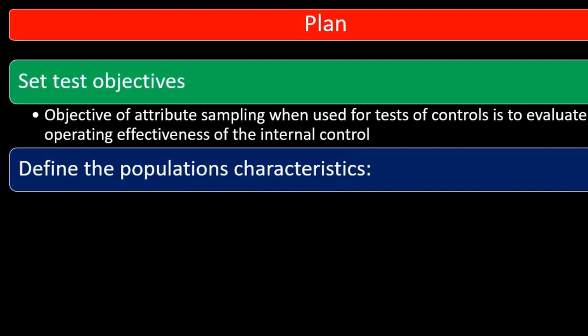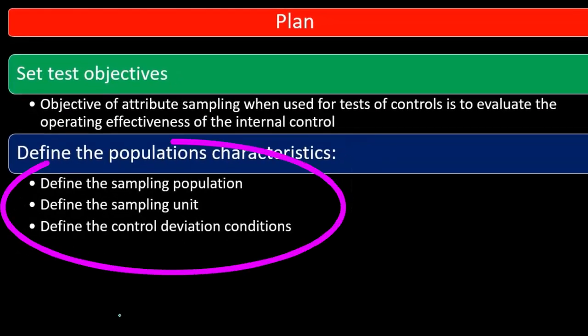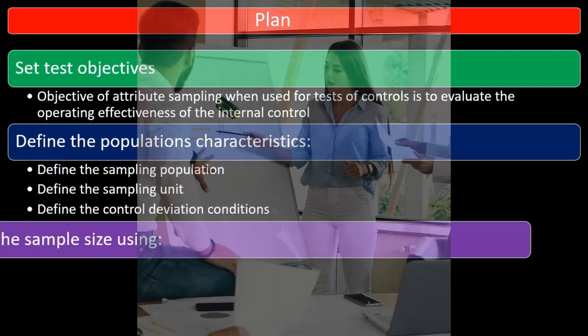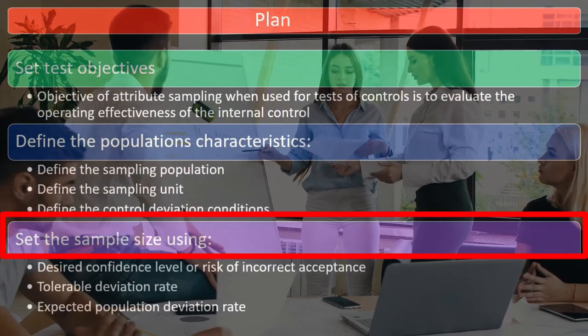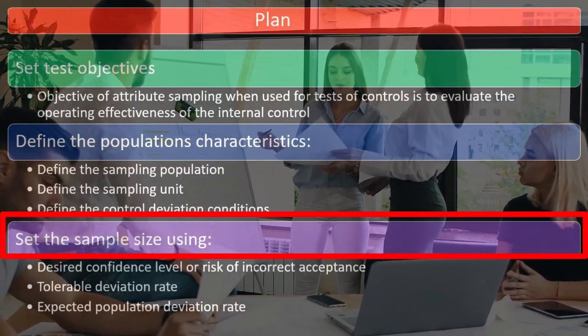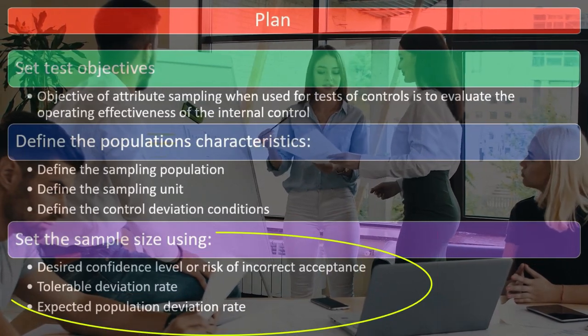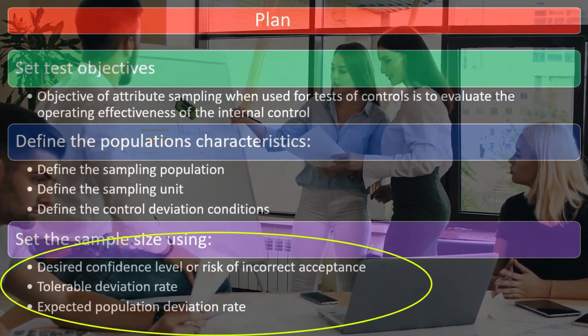We will define the population's characteristics, including: define the sampling population, define the sampling unit, and define the control deviation conditions. Next, we will set the sample size using the desired confidence level or risk of incorrect acceptance, tolerable deviation rate, and expected population deviation rate.